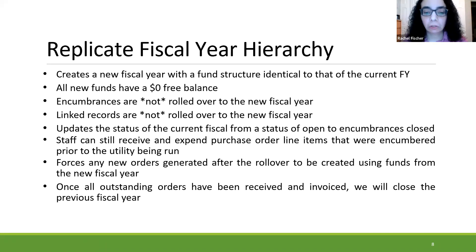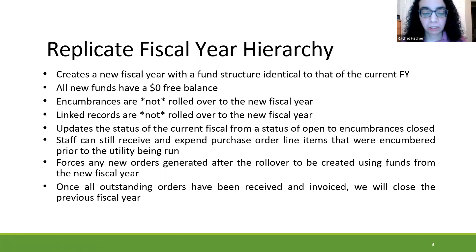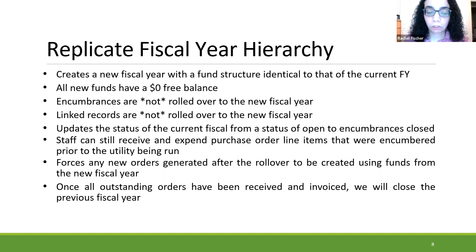Several libraries choose to replicate the fiscal year hierarchy. This creates a new fiscal year with a fund structure identical to the current one but does not roll over encumbrances or link records. The beginning free balance is zero dollars and the status of the previous fiscal year is updated to 'encumbrances closed.' In this state, staff can still receive and expend purchase order line items that were encumbered prior to the utility being run, so they can create and pay invoices.